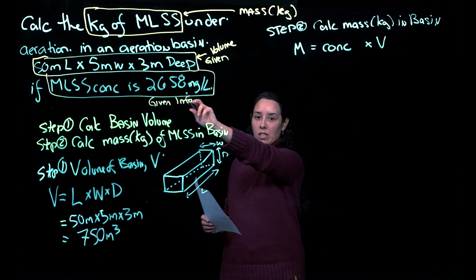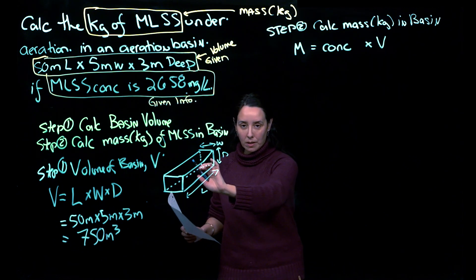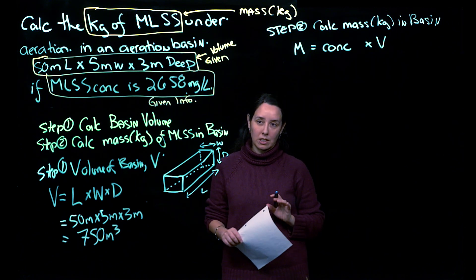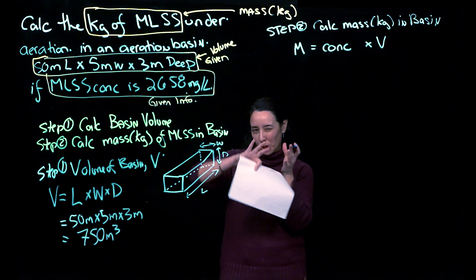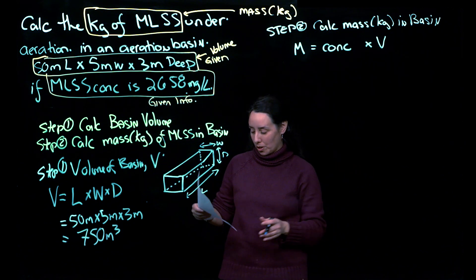So we've got the concentration over here. We are given that. We know that in that basin itself, we've got 2,658 milligrams per liter. And then we're just going to multiply it out by that whole volume that we have.